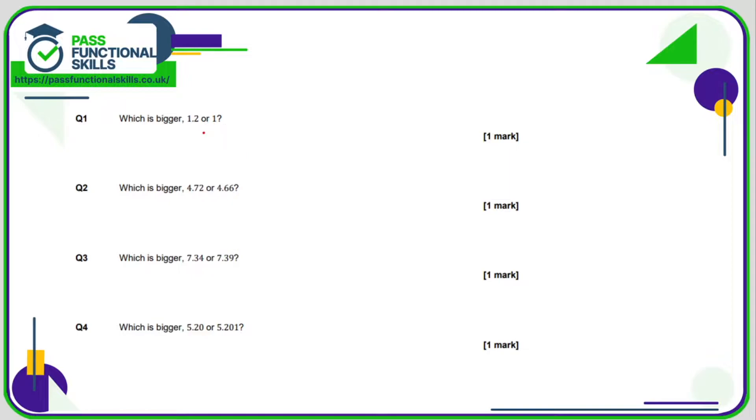So which is bigger, 1.2 or 1? Well if you're not sure you could always write 1.2 and 1 as a decimal which is 1.0. As you can see in the units column everything is the same. But in the tenths, 2 is bigger than 0, therefore 1.2 is bigger than 1.